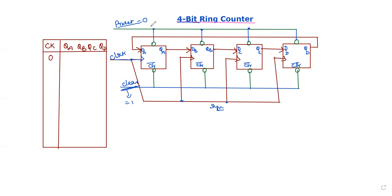The preset is converted as preset bar. Similarly, for all the outputs it becomes preset bar. Initially, before applying the clock pulse, when we apply clear equal to one, it clears all the flip-flops to zeros. This is the first step.